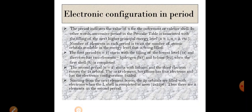Starting from boron, the 2p subshell begins to fill. The second period ends at neon, when the L shell is complete. Neon's outer electronic configuration is 2s² 2p⁶. For the second period, the s subshell has 1 orbital and p has 3 orbitals, giving a total of 4 orbitals. Therefore, the total number of elements is 2 × 4 = 8 elements in the second period.